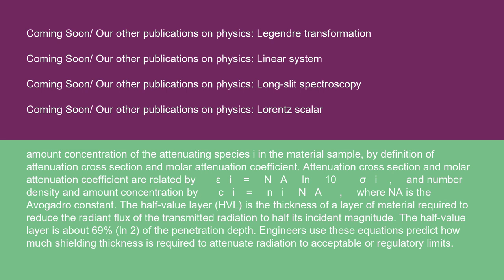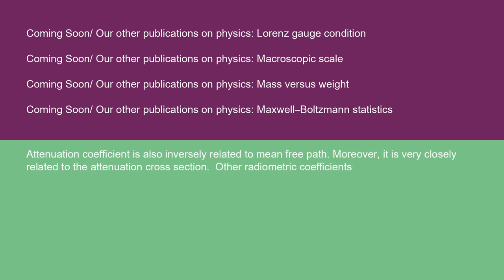The half-value layer (HVL) is the thickness of a layer of material required to reduce the radiant flux of the transmitted radiation to half its incident magnitude. The half-value layer is about 69% (ln 2) of the penetration depth. Engineers use these equations to predict how much shielding thickness is required to attenuate radiation to acceptable or regulatory limits. The attenuation coefficient is also inversely related to mean free path and very closely related to the attenuation cross-section.